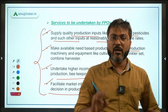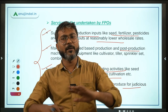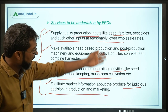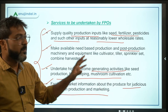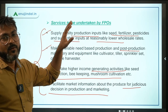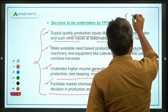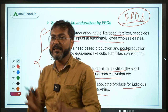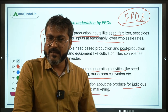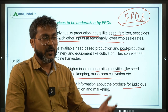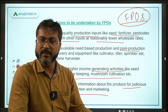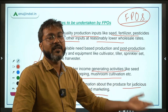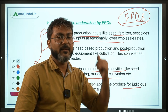You might wonder: FPOs are groups of small and marginal farmers who are deprived of basic things — so how can they provide these services? The answer is that after a Farmer Producer Organization is formed, it will receive various supports under this scheme: technical support, capacity building, and training. The FPO will then pass on these benefits to the small and marginal farmers of the country.